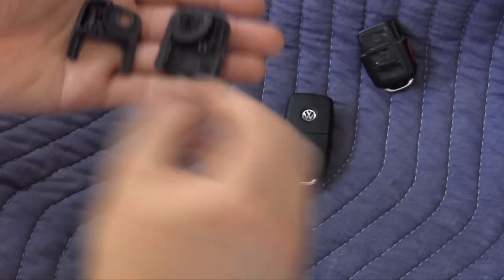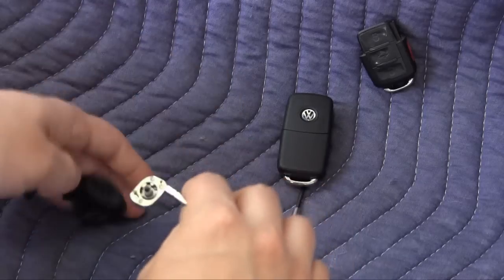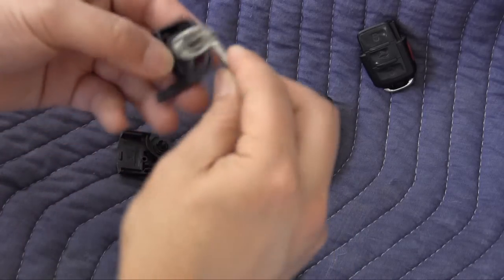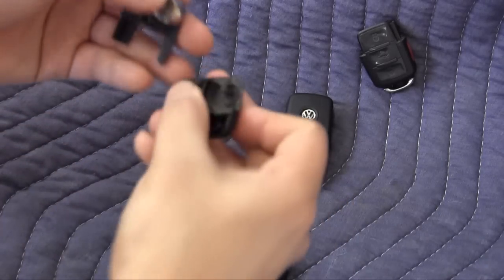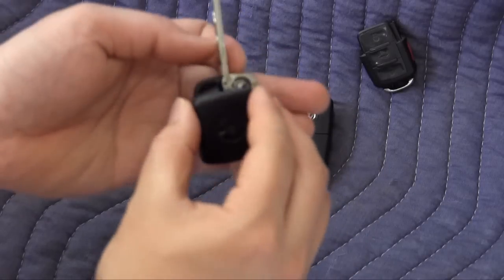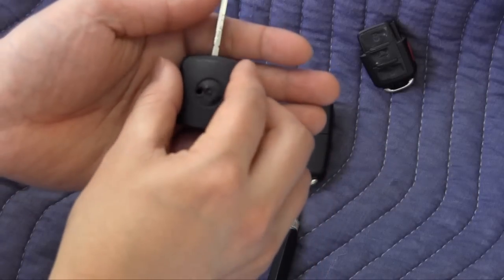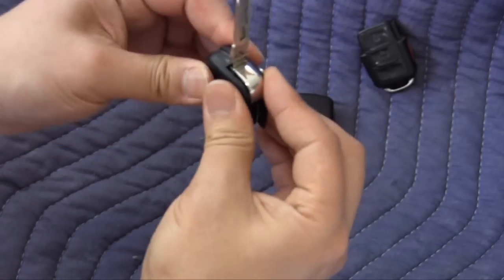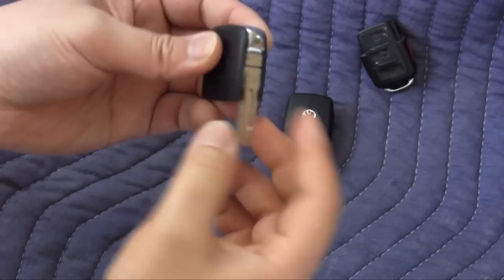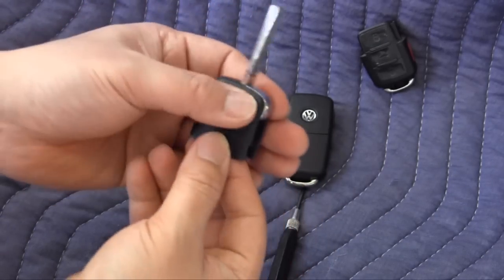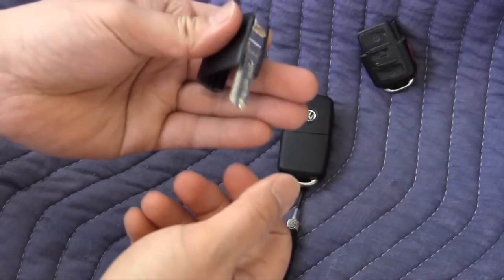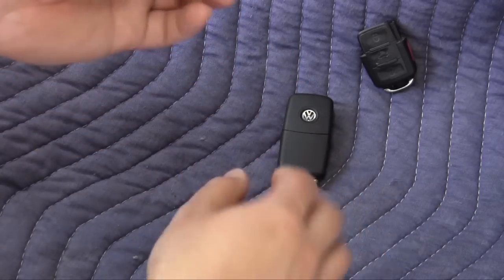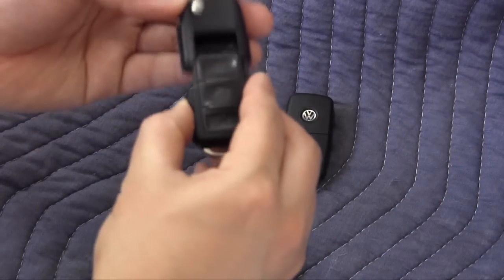Now when you go to reinstall the switchblade, you have to get the spring motion right. So I suggest putting this on and then turning this counterclockwise, then pressing the two halves together just like that. Otherwise, if you don't get it right, your switchblade will always stay in the closed position when you press this button. Installation is the reverse of removal.